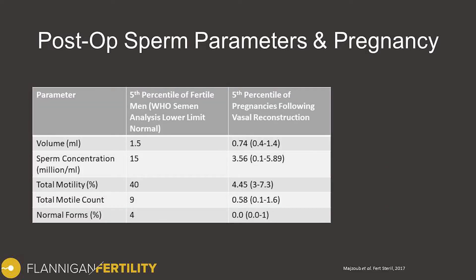Looking at the specific values, the volume is nearly half of the normal reference range — just under one milliliter. The sperm concentration at the lowest fifth percentile is five times lower: 3.5 million sperm per milliliter. Total motility is also significantly lower — just less than 5% compared to 40% in the general population. The total motile count, a measure of the total number of moving sperm in an ejaculate, is just under one million, and we don't even need any normal forms to achieve pregnancy in this group.